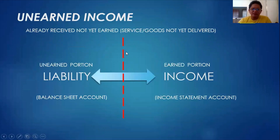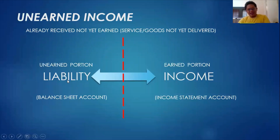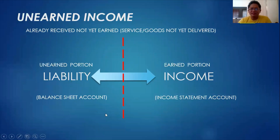At the end of the year, we have to make adjustments. If we recorded it as a liability, we already earned a portion of that, so we have to transfer it into an income statement account. Likewise, if we opted for the income method, some of it is not yet earned — therefore it's a liability; we owe it to our customers because we haven't rendered or delivered the goods or services yet.